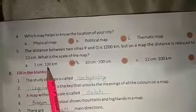Now 5. The distance between two cities, P and Q, is 1200 km. But on a map, the distance is reduced to 12 cm. What is the scale of the map? Here is the answer option is A. 1 cm ratio, 100 km.